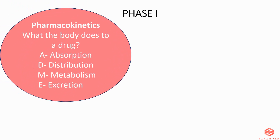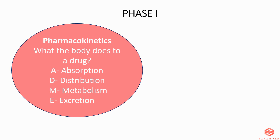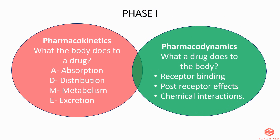Pharmacokinetics is described as what the body does to the drug. It refers to the movement of a drug into, through, and out of the body, and involves ADME: absorption, distribution, metabolism, and excretion. Pharmacodynamics is described as what a drug does to the body. It involves receptor binding, post-receptor effects, and chemical interactions.